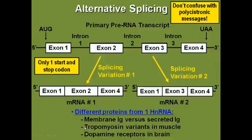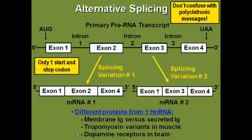Other examples include different tropomyosin variants and troponins in muscle — all made by differential RNA splicing. Alternative splicing and differential RNA splicing are terms used synonymously. Finally, the various dopamine receptors in your brain are not made from separate genes; all dopamine receptors are made from the same gene, and what distinguishes one from another is the way the mRNA was spliced. Dopamine receptors in the brain, tropomyosin variants in muscle, and immunoglobulins are three areas commonly tested where alternative splicing is operational.